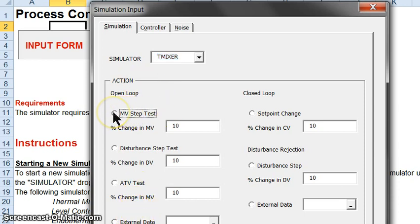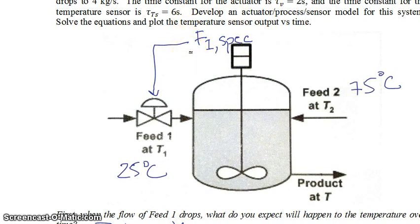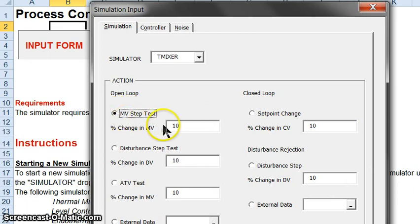Let's take a look at the open loop manipulated variable step test for our thermal mixer. The thermal mixer has one feed stream at 25°C and another at 75°C. They're both being mixed and you have a product at a particular outlet temperature. The manipulated variable is the flow rate of one stream, called F1 spec, which can be changed suddenly by 10% at time t equals five units of time. Note that in this class we typically talk about changes at t equals zero, but in the simulator changes happen at t equals five units of time.